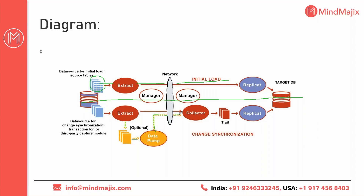The collector process is one of the background processes in GoldenGate. Unlike extract, manager, replicate, and data pump — which are foreground processes you can monitor from the GoldenGate instance — collector is a background process you cannot see directly. The collector receives all data coming from the network from the source database and places all that data into the remote trail file at the target side.